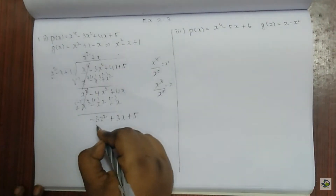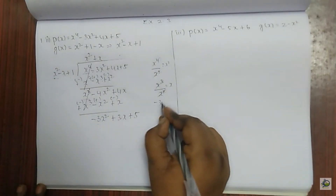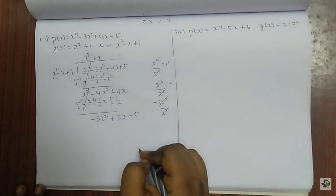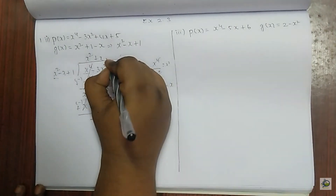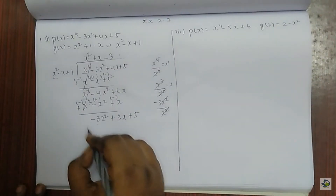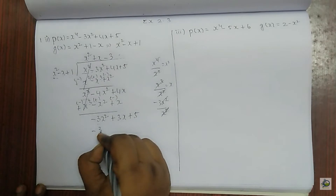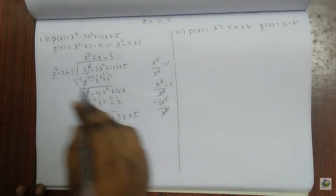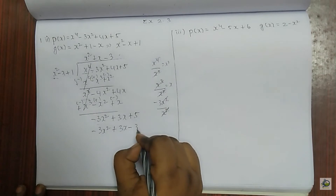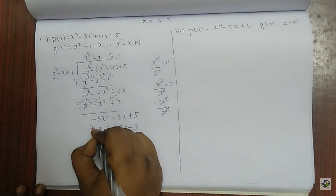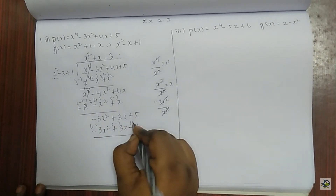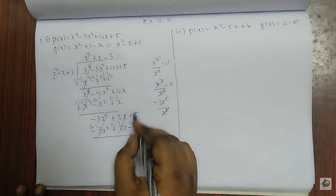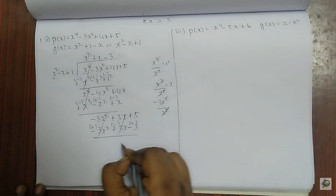When I divide these both, I get minus 3 x square divided by x square — x square and x square get cancelled and I get minus 3. When I substitute minus 3: minus 3 x square, minus into minus gives plus 3x, plus into minus gives minus 3. Now I change the signs. These two get cancelled, these two get cancelled, and 5 plus 3 is 8.